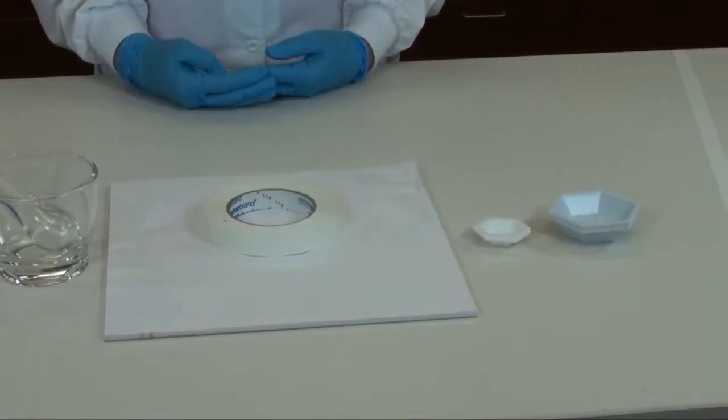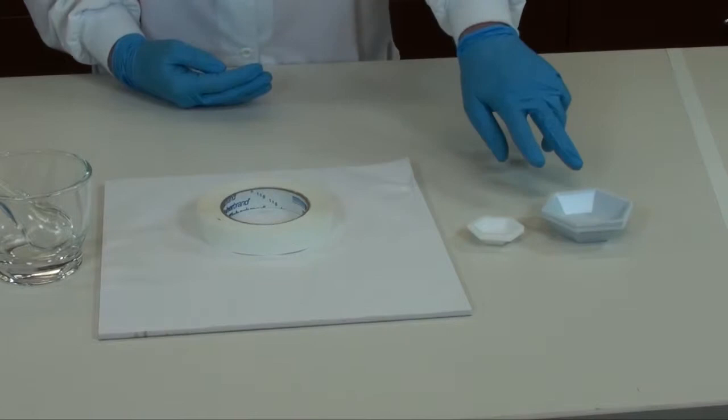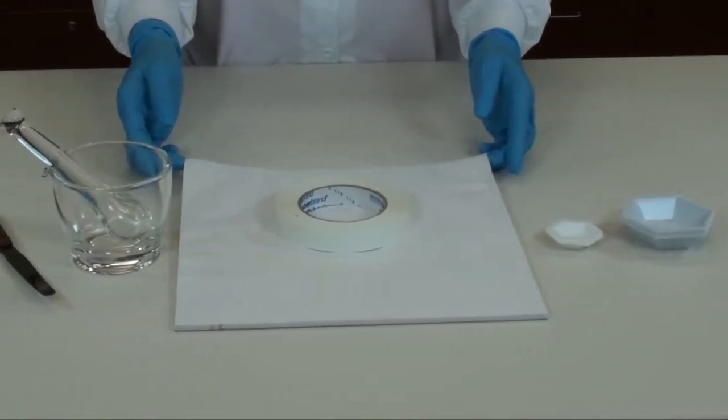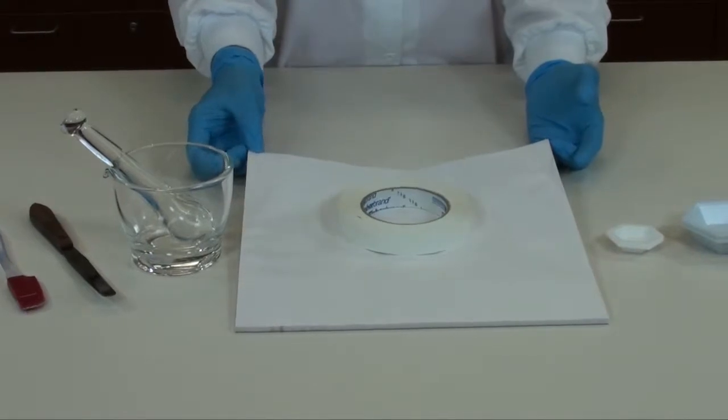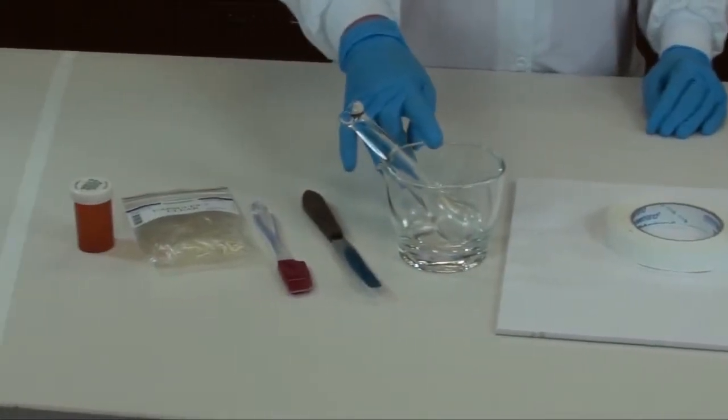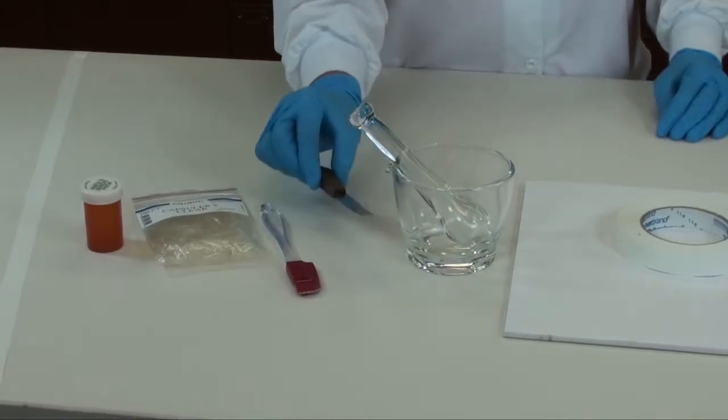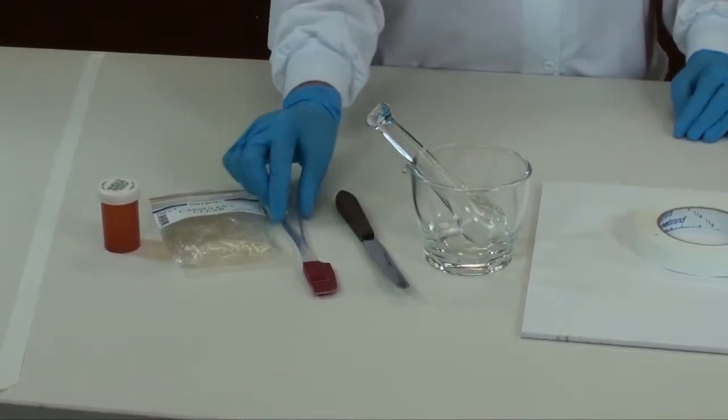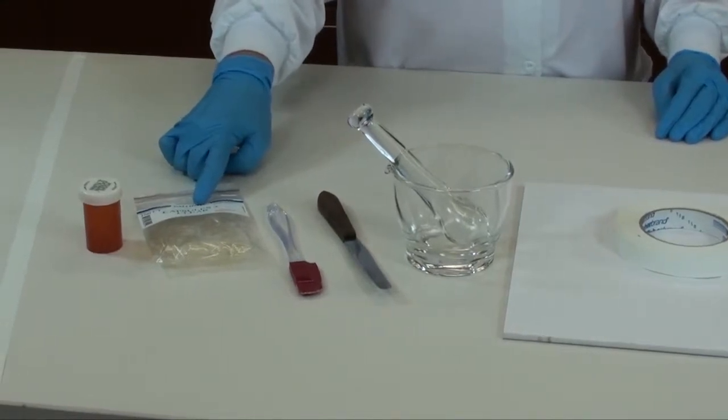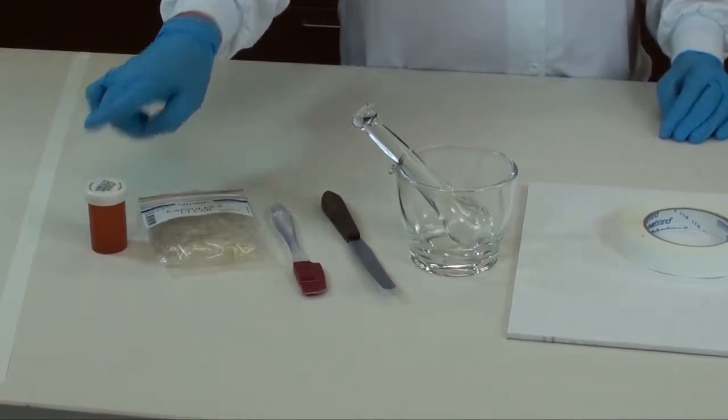The required equipment for the capsules prescription are medium or small weigh boats, ointment paper with tape so you can tape it down, a glass mortar and pestle, a metal spatula, a rubber spatula, empty gelatin capsules, and a prescription bottle to dispense the prescription.